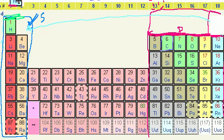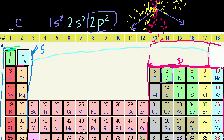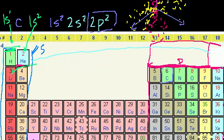Hydrogen's configuration is 1s1 — one electron in the s subshell of the first energy shell. Helium's configuration is 1s2. Then you start filling the second energy shell: lithium's configuration is 1s2, 2s1 — the first two electrons fill the 1s orbital and the third goes into 2s1.